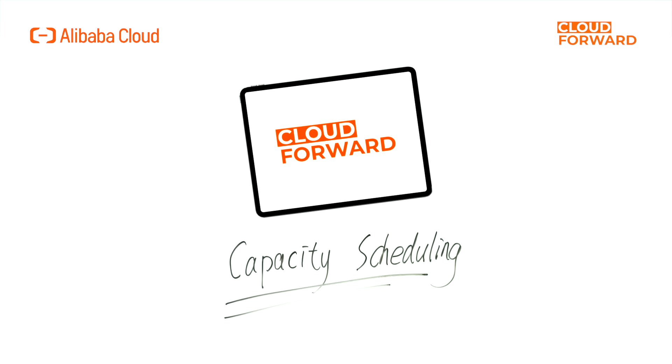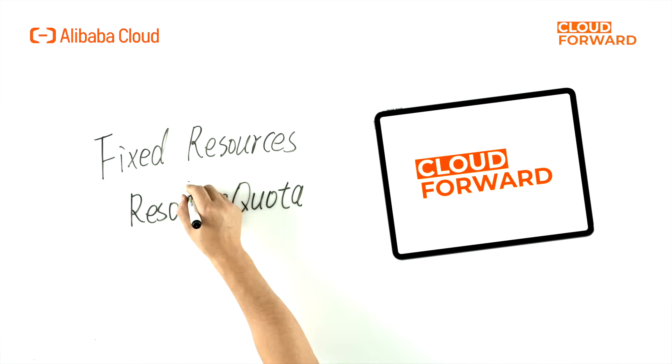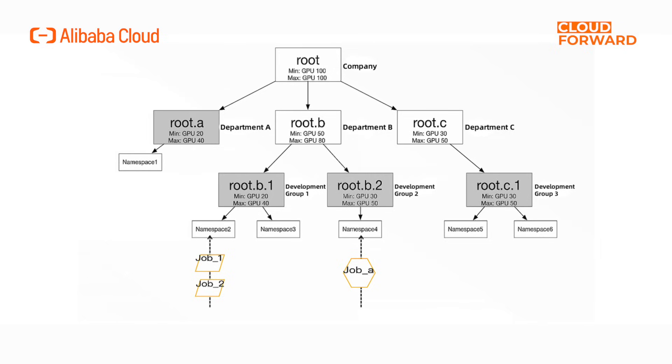The capacity scheduling feature provided by the ACK Cloud Native AI suite enhances the overall resource utilization of the cluster. When dealing with multiple users in a cluster, fixed resource allocation through Kubernetes' native resource quota method may result in lower overall resource utilization due to different users' varied resource usage cycles and patterns. To address scenarios involving dynamic borrowing and returning of multi-tenant quotas, ACK borrows the design philosophy from YARN capacity scheduling, introducing elastic quota groups to achieve capacity scheduling. This ensures efficient resource allocation and enhances overall cluster utilization through resource sharing, fully compatible with YARN design, with support for dynamic configuration, automatic scaling, and a multi-level structure to flexibly align with enterprise organizational structures.